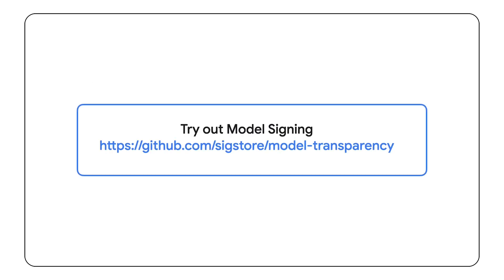To learn more about model signature verification, explore Sigstore's model transparency GitHub repository. Now that we've verified and deployed our models in Vertex AI, our security journey is far from over. Next, we need to reduce our attack surface by tightening the permissions provided to humans, machine identities, applications, and agents that access the models and data.